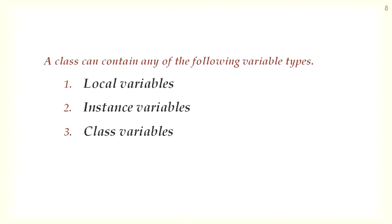A class can contain any of the following variable types: first, local variables; second, instance variables; and third, class variables.